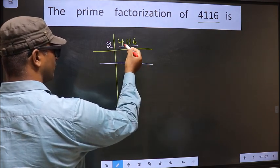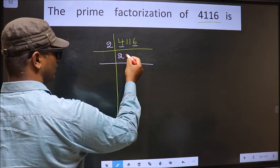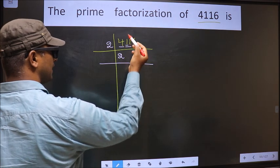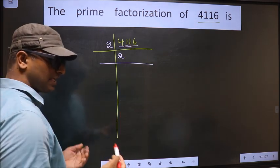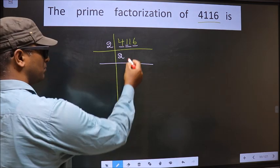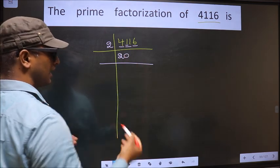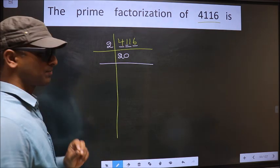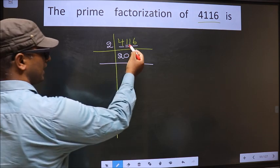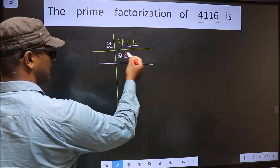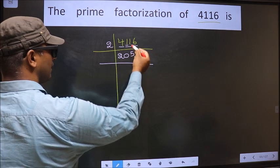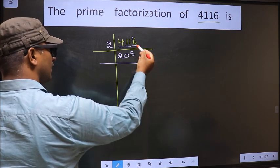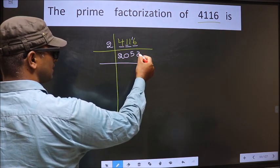The first number is 4. When do we get 4 in the 2 table? 2 times 2 is 4. The other number is 1; 1 is smaller than 2, so we should take 2 numbers — that is 11. Whenever we are taking 2 numbers, compulsory we should put 0. Now here we have 11. A number close to 11 in the 2 table is 2 times 5 is 10. 11 minus 10 is 1, carried forward, making it 16. When do we get 16 in the 2 table? 2 times 8 is 16.